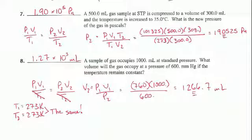Number seven, a 500 milliliter gas sample at STP. So we've just told you a volume, a temperature, and a pressure.